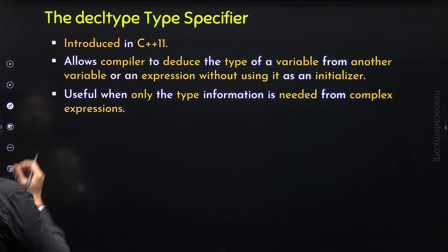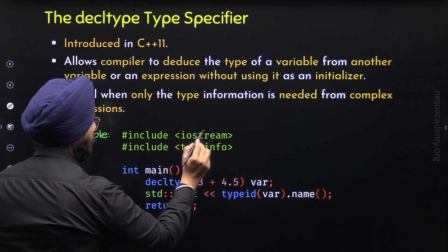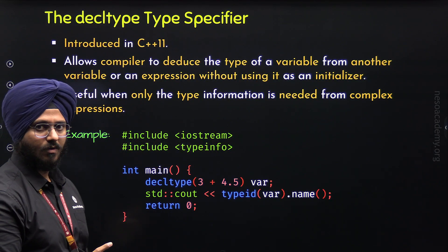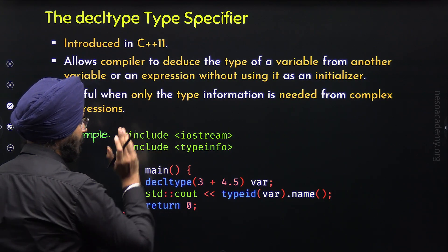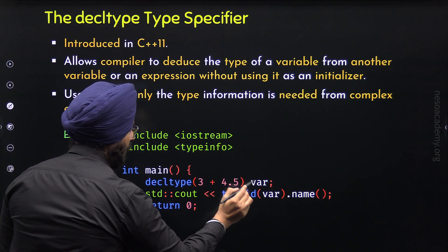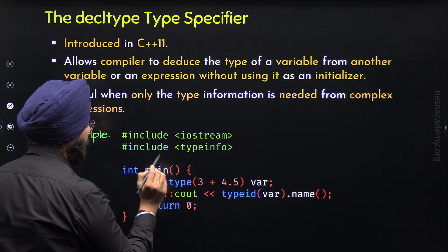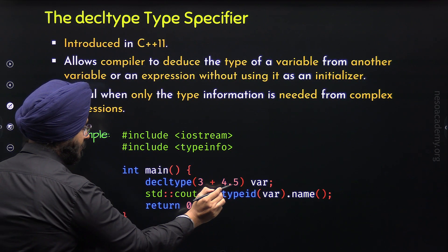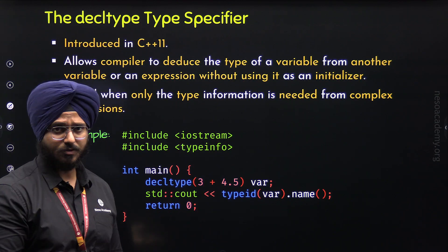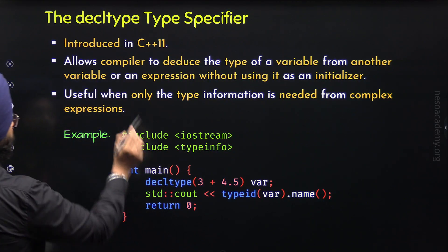Now, through an example, let's see the implementation of the decltype type specifier. This is the example program. I have included the iostream header file here. Apart from this, I have also included the typeinfo header file — we will learn why shortly. In the main function, I have defined this variable 'var' without specifying its data type. Instead, I have used the decltype type specifier. The syntax requires the keyword decltype first, then within parentheses, we provide a variable or expression of our choice.